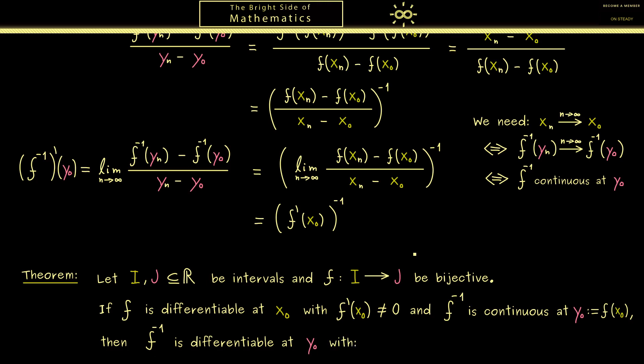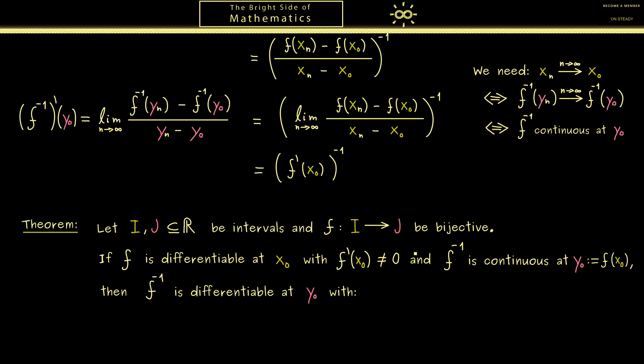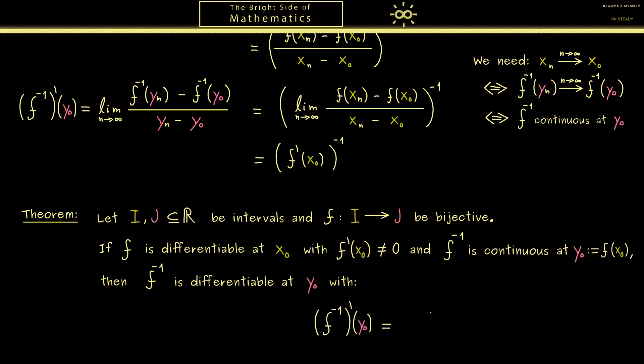And in addition we also know how to calculate this derivative. Namely it's given by 1 over the derivative of f at x0, where instead of x0 we should write f inverse of y0, because then we have the same variable on the left hand side and the right hand side, which is much better for explicit calculations.